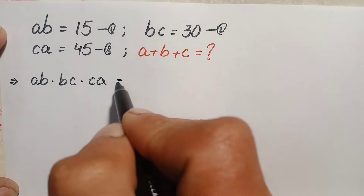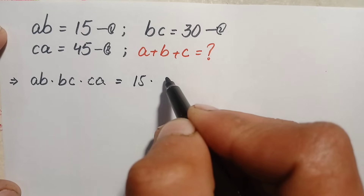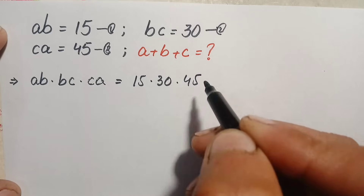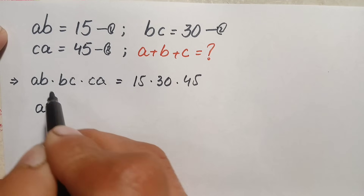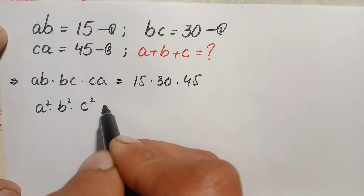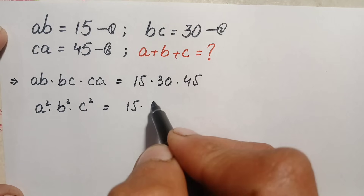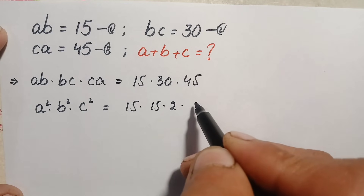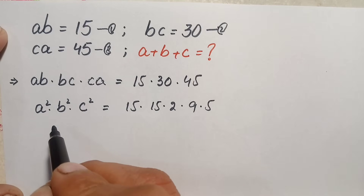This equals the product of their right-hand side values: 15 times 30 times 45. On the left-hand side each variable appears twice, so we get a² times b² times c². On the right-hand side we can write 30 as 15 times 2, and 45 as 9 times 5, giving us 15 × 15×2 × 9×5.